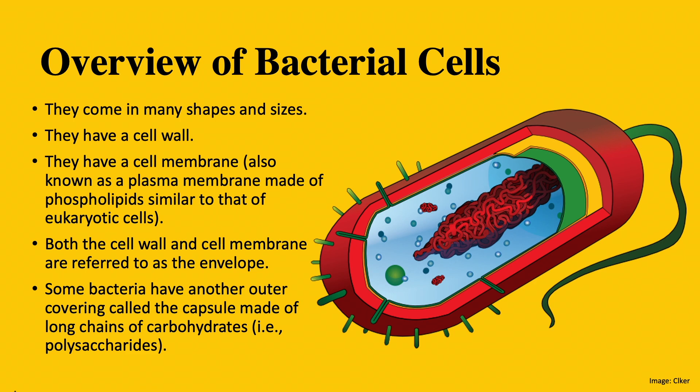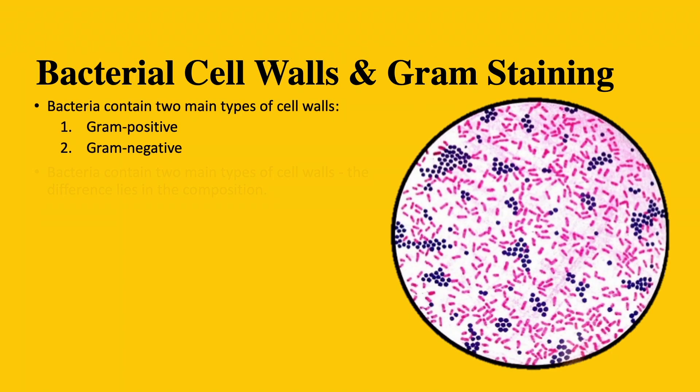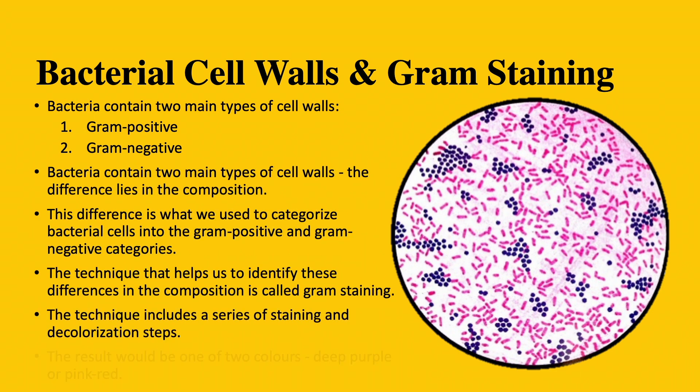Now that we briefly reviewed what bacterial cells are like, let's start talking about their cell walls and gram staining. Bacteria contain two main types of cell walls. The differences in these cell walls lie in the composition of them. This difference is what we use to categorize bacterial cells into the gram-positive and gram-negative categories. The technique that helps us identify these differences is called gram staining, and the end result would be one of two colors: purple or pinkish-red.